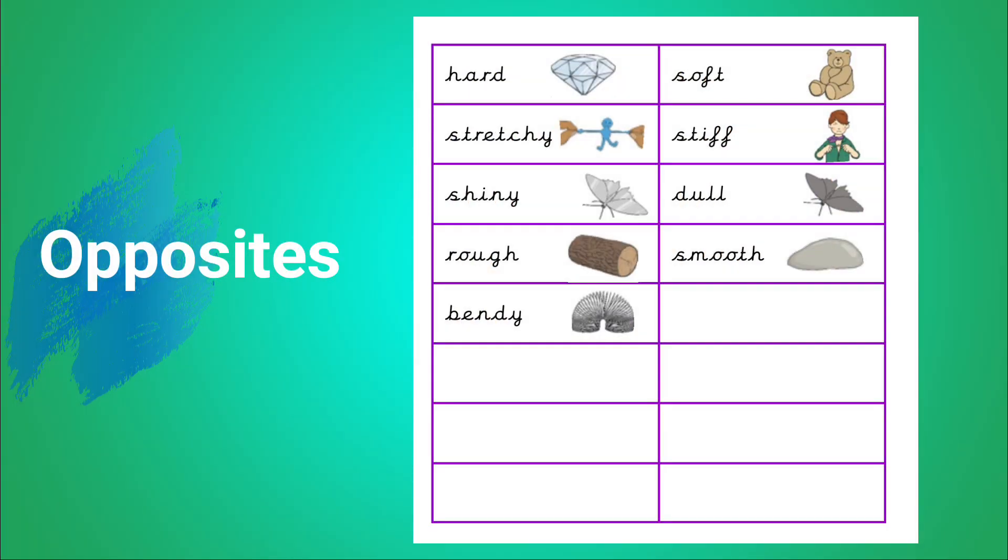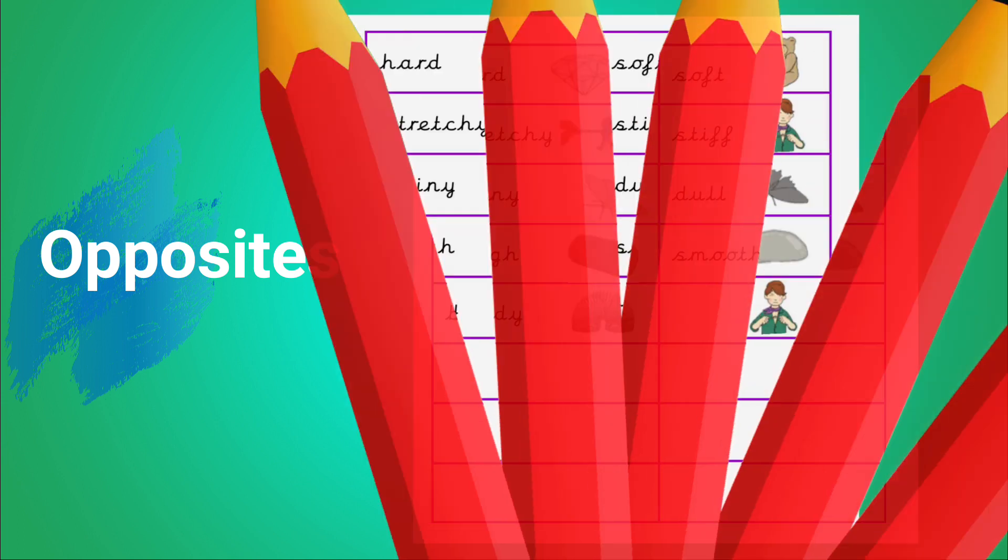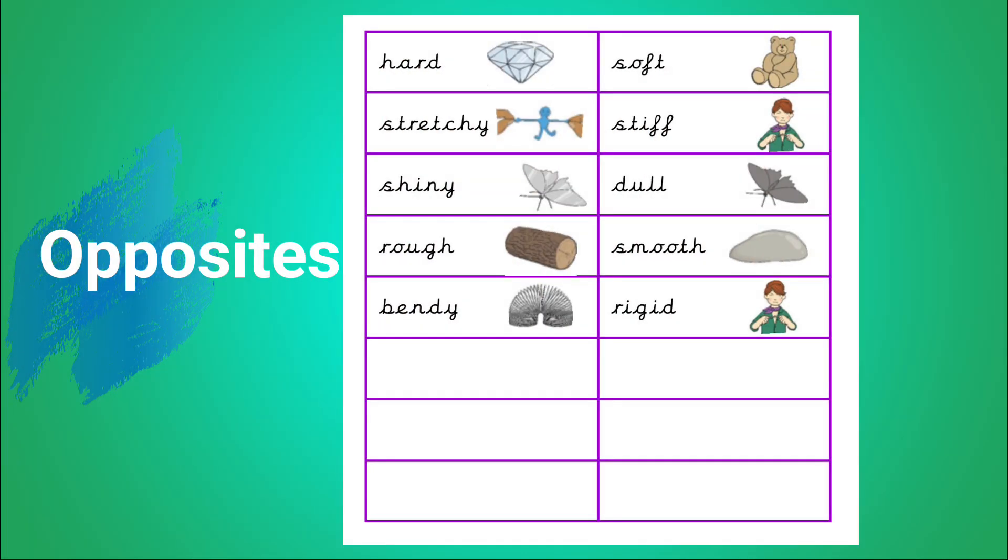Bendy. Like a slinky. The opposite of bendy is rigid. Like a rigid piece of wood.